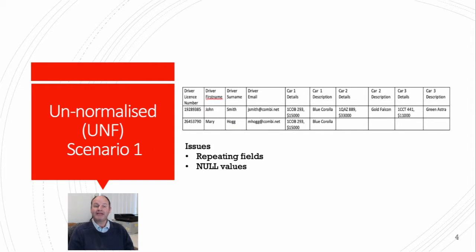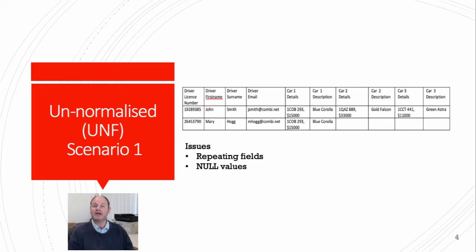The relation on this slide is not in first normal form as it has repeating fields such as car details and car description. There are also null values in this table on the Mary Hogg row. Therefore, this table is unnormalized.